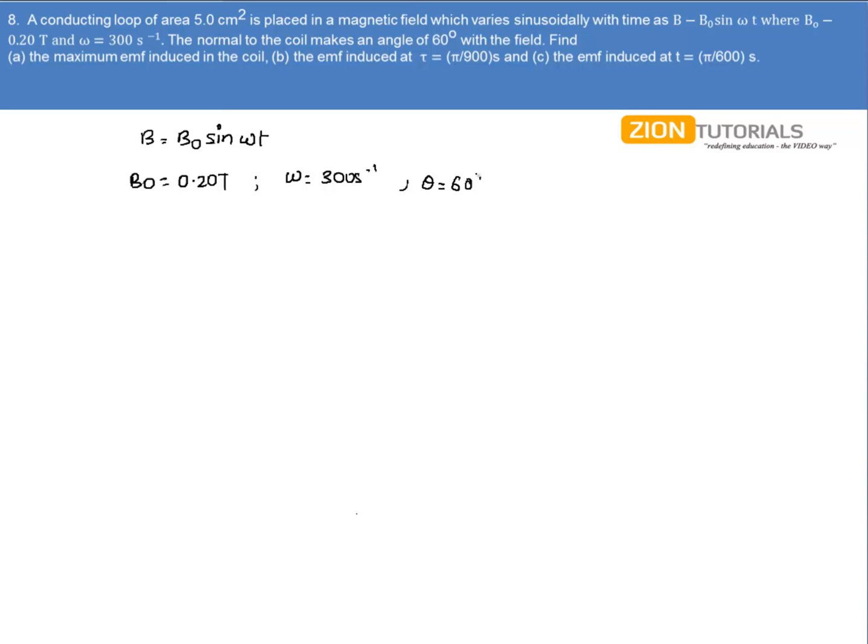The flux or the EMF can be directly calculated by minus dΦ by dt, that is d by dt of flux, which is nothing but B into area, d by dt of B·A·cos θ.